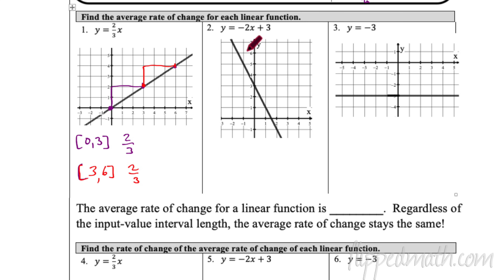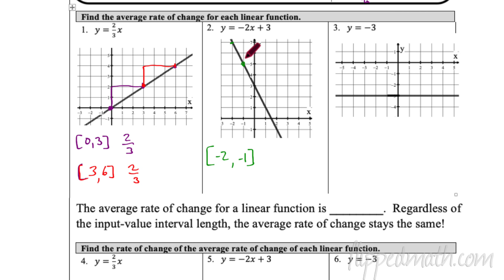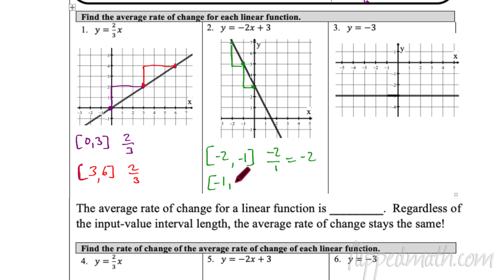Let's look at number two. I'll pick two nice points: (−2, 7) and (−1, 5). The average rate of change from −2 to −1 is down 2 over 1, which simplifies to −2. If you pick a different set of points, say (−1, 0) to (0, something), you get the same thing: −2 over 1.